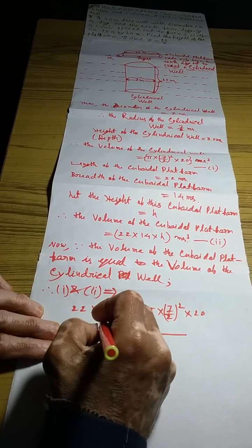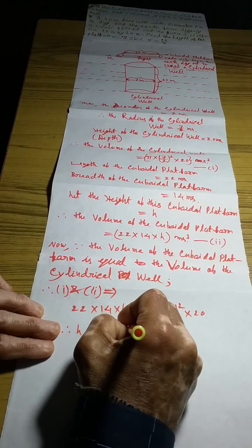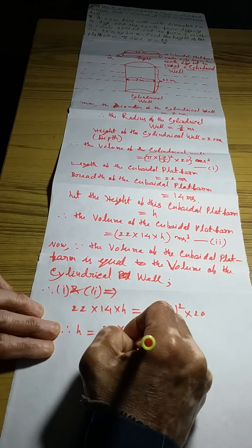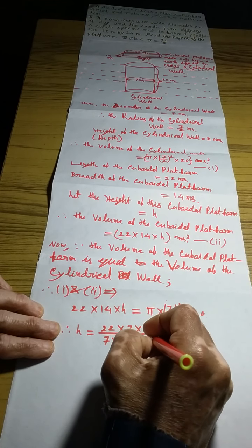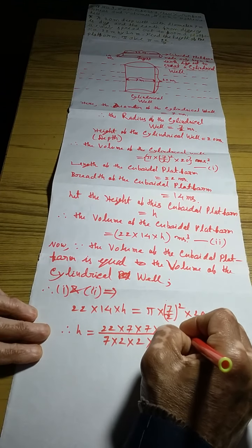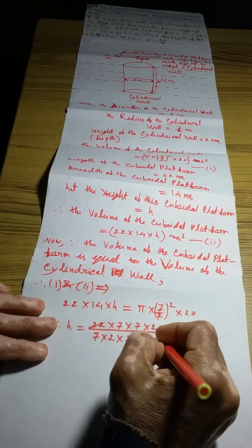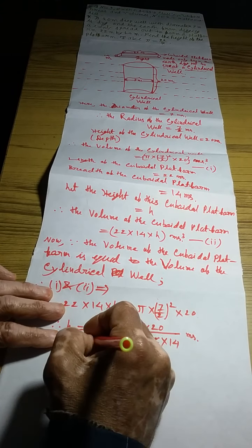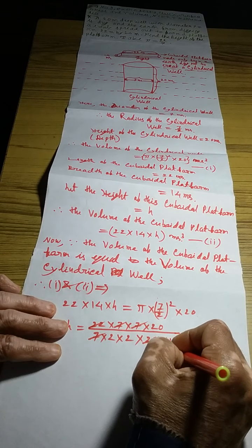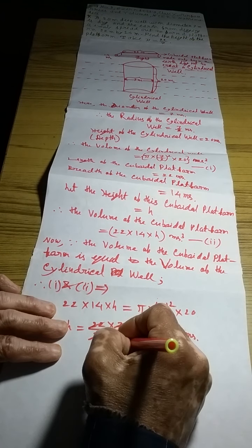In place of π we write 22/7, so H = (22/7) × (7/2) × (7/2) × 20 divided by (22 × 14). This 22 and that 22 cancel, and the 7s cancel with the 14, and 20 simplifies. Solving this gives H = 2.5 meters. That means the height of the cuboidal platform is 2.5 meters.